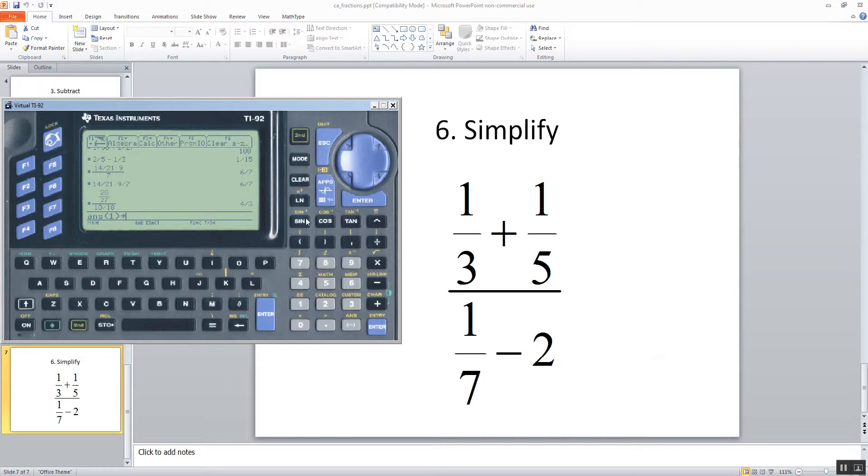Let's take a look at this. This is a complex fraction, fraction inside of a fraction. And trick here is you just put parentheses around the top, parentheses around the bottom. So I'll do a beginning parentheses 1 divided by 3 plus 1 divided by 5 closing parentheses divided by beginning parentheses 1 divided by 7 minus 2 closing parentheses and then push enter.